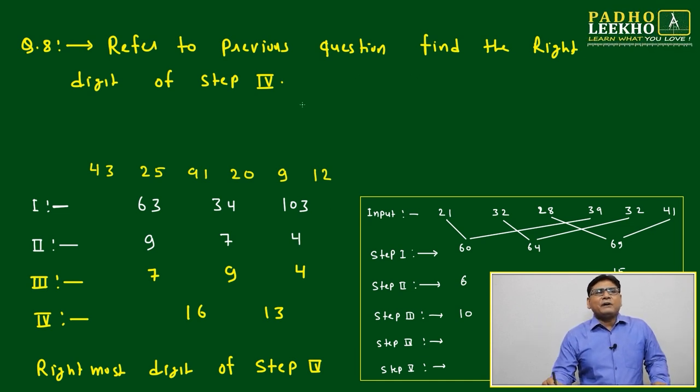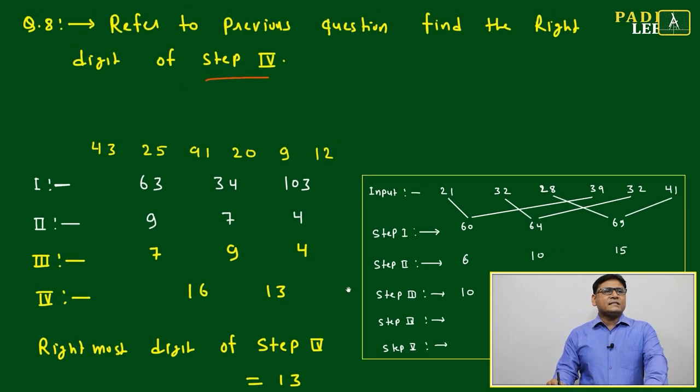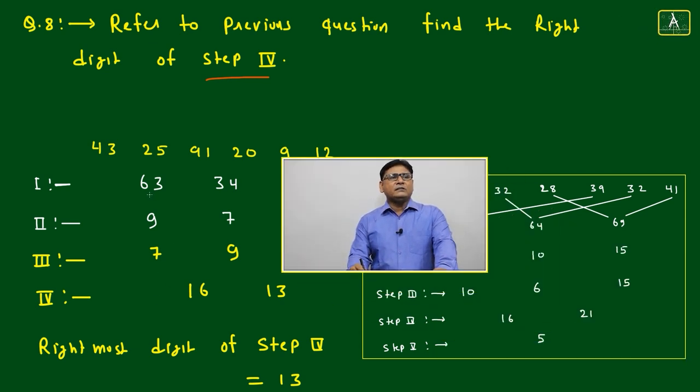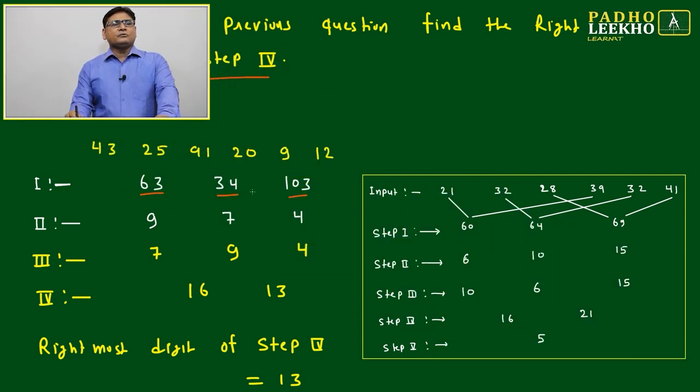Refer to previous question. Find the rightmost digit of step 4. What we will do? The same input. Just we will keep on going up to step 4. Like here, it is 63, 34, 103. How it has come? Like this, like this, and like this. We are adding, nothing else.